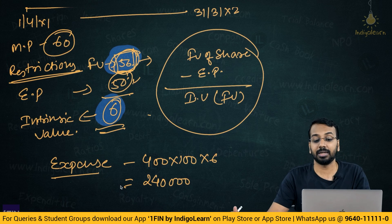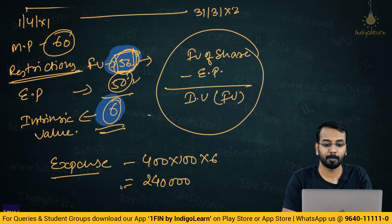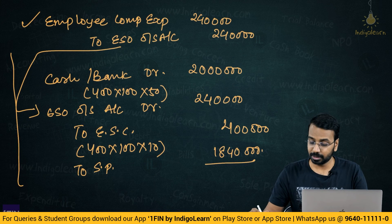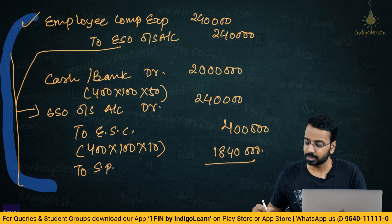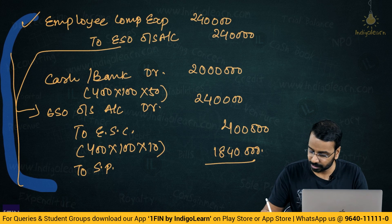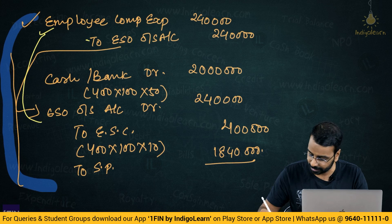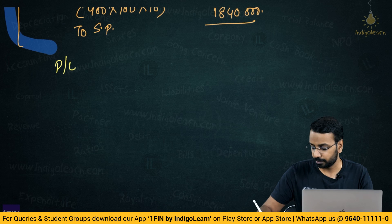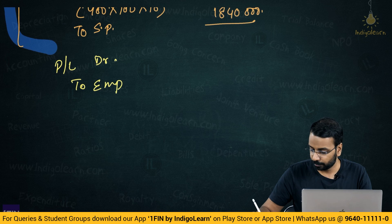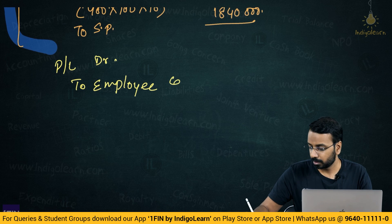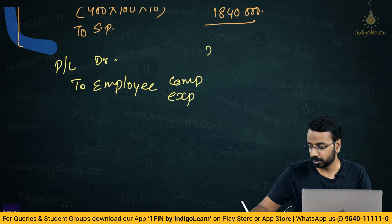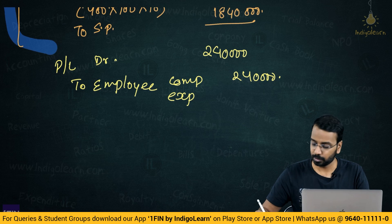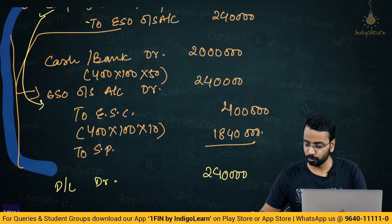If no specific information is given, you can consider fair value of share minus exercise price as the intrinsic value, which can also be used as the fair value of the option. Instead of passing two separate entries, you can combine them into a single entry. Additionally, you need to transfer the employee compensation expense account to P&L — that is another entry to pass for ₹2,40,000.